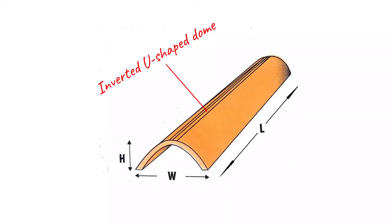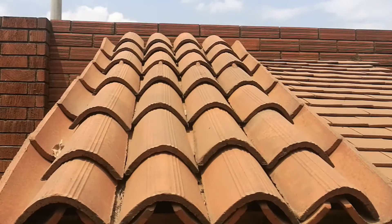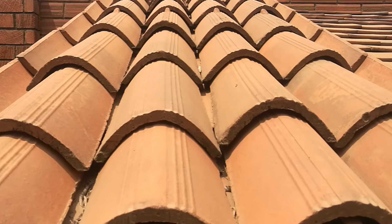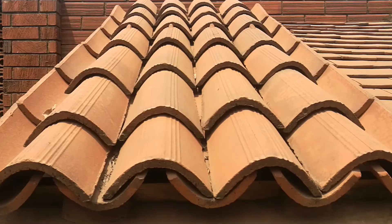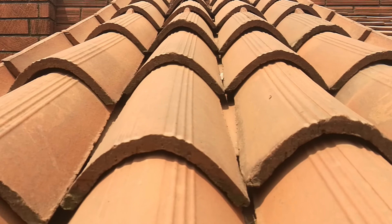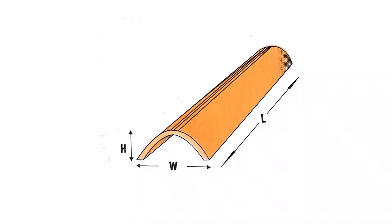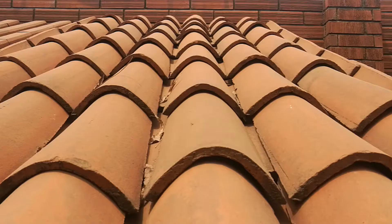The fifth and final design is called the Spanish tile. It has an inverted U-shaped dome design. The dimensions are 430 millimeters in length, 190 millimeters in width, and 85 millimeters in height. A single Spanish tile weighs 2 kilograms, and to cover a square meter you will need 30 pieces.